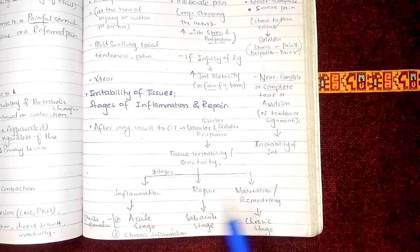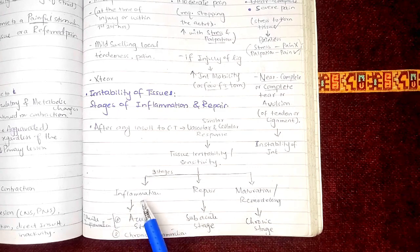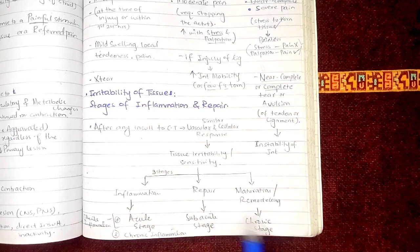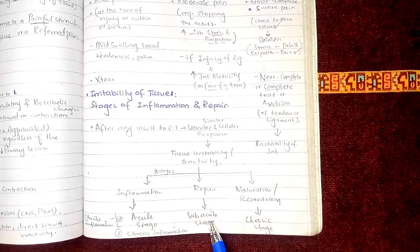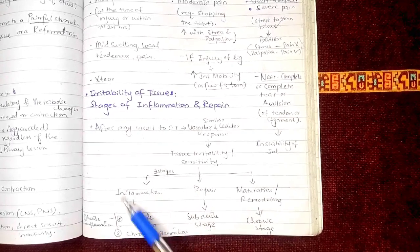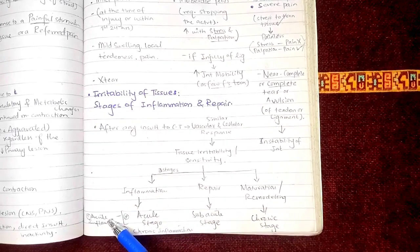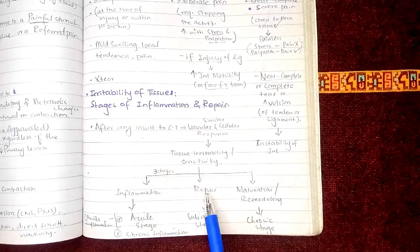There are two types of inflammation: acute inflammation and chronic inflammation. Acute inflammation has the following stages: the acute stage, the sub-acute stage, and the chronic stage. In all of these stages, inflammation would be present, and then with the passage of time it would get repaired and later remodeled with maturation.